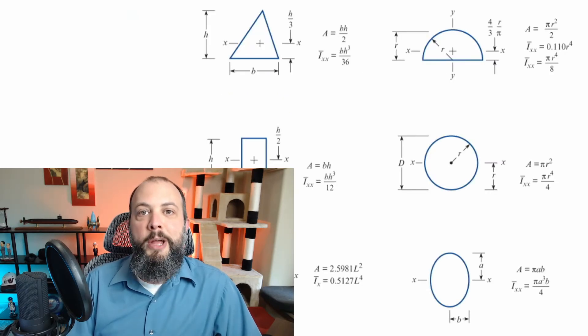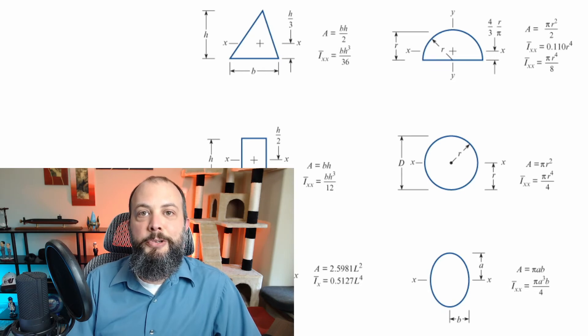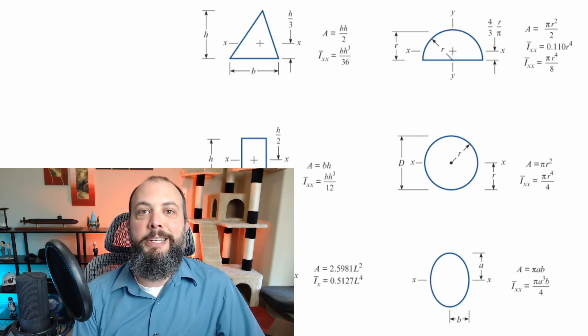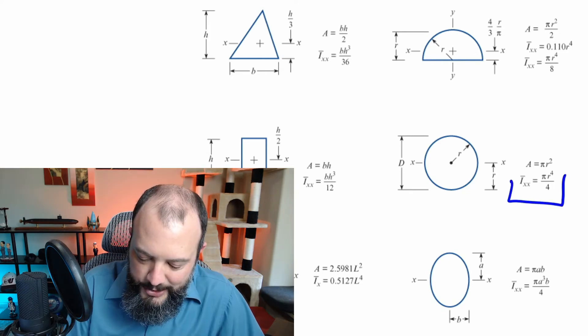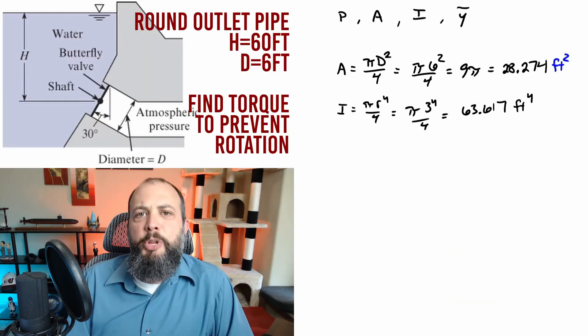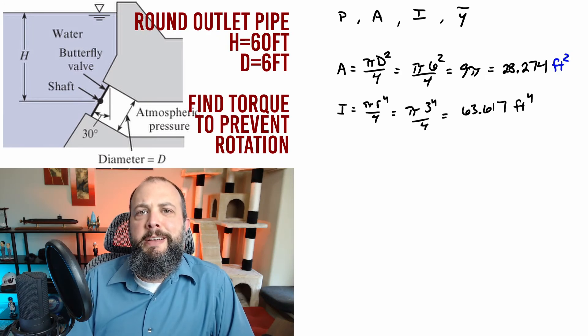To find moment of inertia, if you don't remember the equation for a circle, you're going to need to find a table. In my book, this is in the appendices. For a circle, I'm using this equation, pi r to the fourth over four. And plugging in numbers, we get about 63 feet to the fourth.